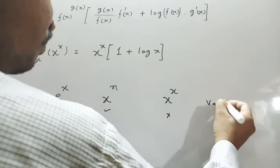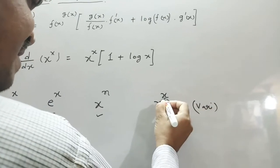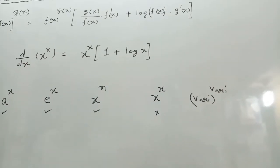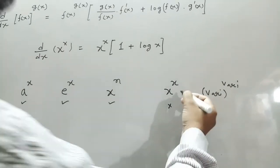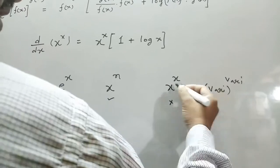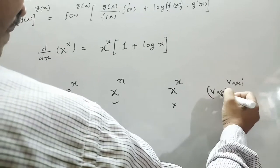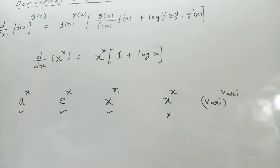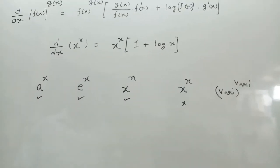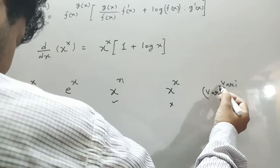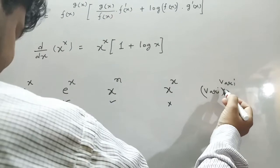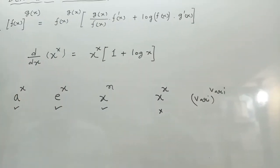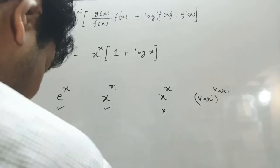Here x is a variable and this x is also a variable, so it is variable to the power variable. Therefore, variable to the power variable — its formula is not available. So to avoid these restrictions, there is a shortcut formula that may be used in competitive exams.